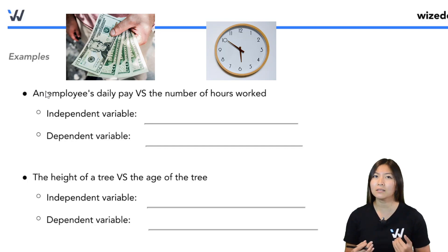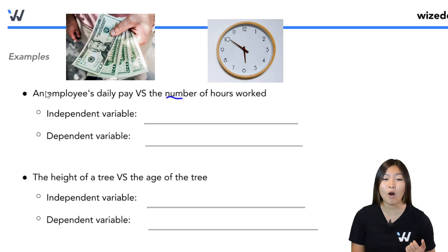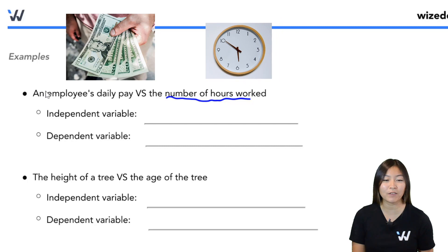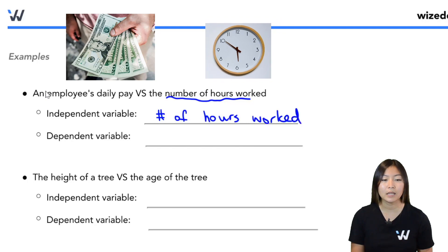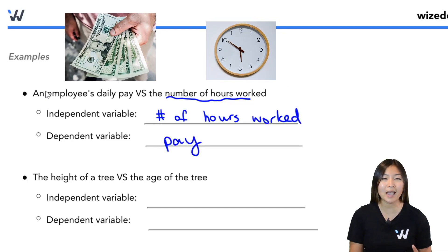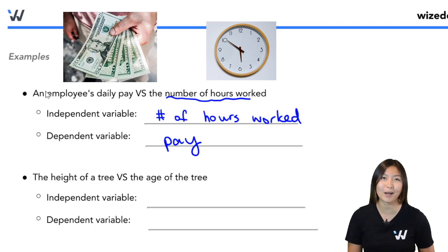Well, if I'm the boss, and I'm trying to figure out how much to pay this person, I need to first figure out how many hours they've worked. So that's why the independent variable is the number of hours that they worked. And the dependent variable is actually their daily pay because the pay depends on how many hours they worked.